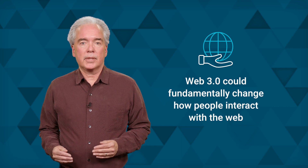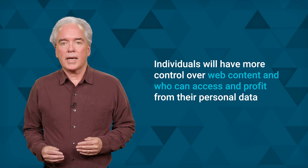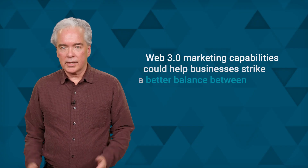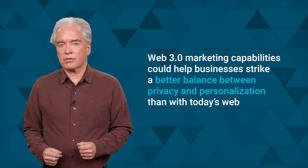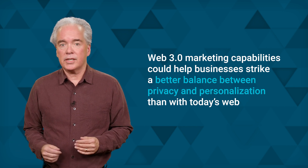If decentralizing the Web's architecture provides even a fraction of the benefits promised by Web 3.0 proponents, it could fundamentally change how people interact on the Web and make money from goods and services. Under Web 2.0, tech giants like Amazon, Google, and Facebook grew quickly by collecting petabytes of customer data and monetizing it in myriad ways. But Web 3.0's global peer-to-peer network could be the great equalizer that makes it hard for companies to hoard data. Individuals will have more control over Web content and who can access and profit from their personal data. Web 3.0 business opportunities are likely to exploit this new ability to tailor Web services to the individual. For example, Web 3.0 marketing capabilities could help businesses strike a better balance between privacy and personalization than with today's Web.